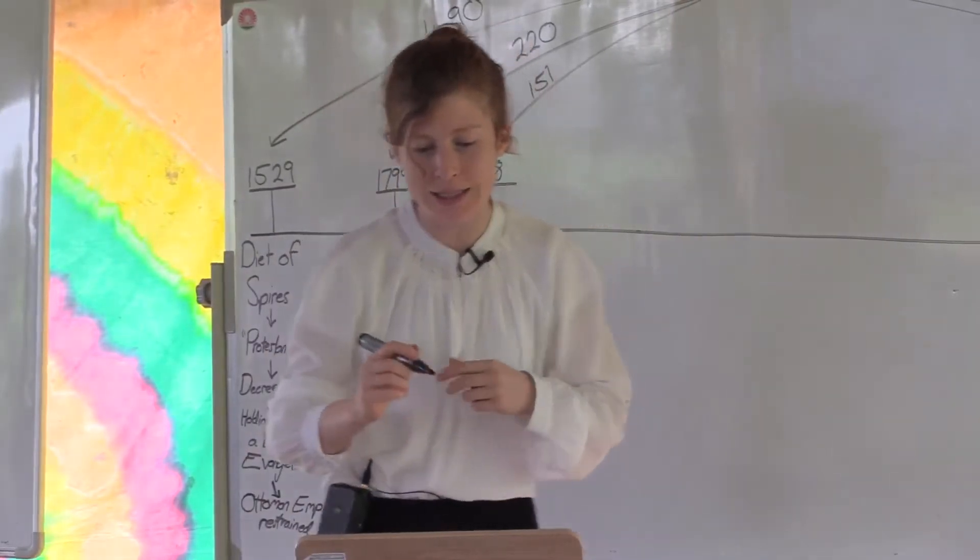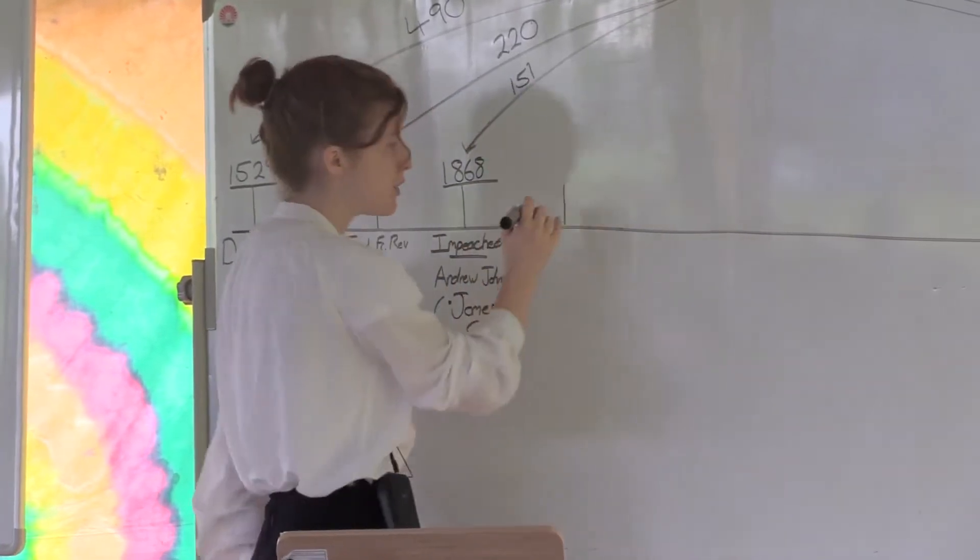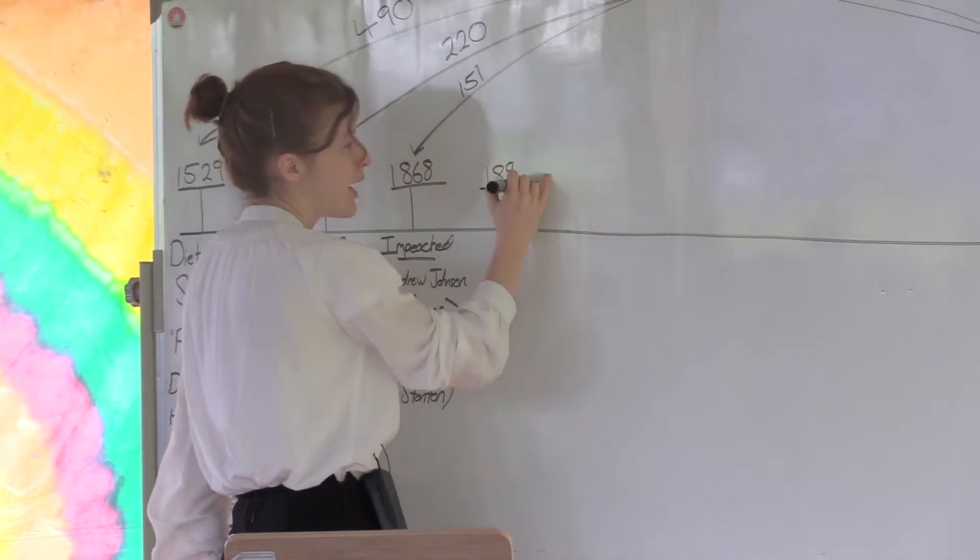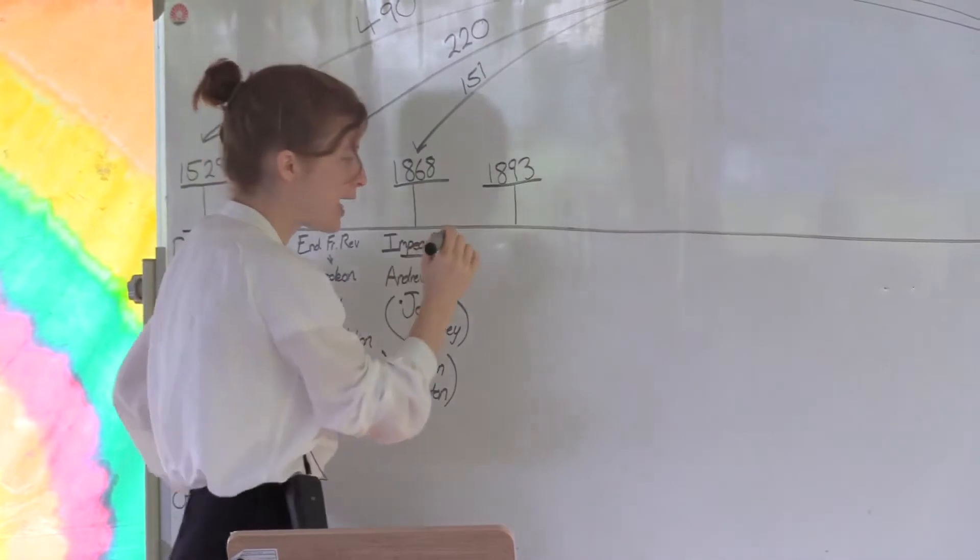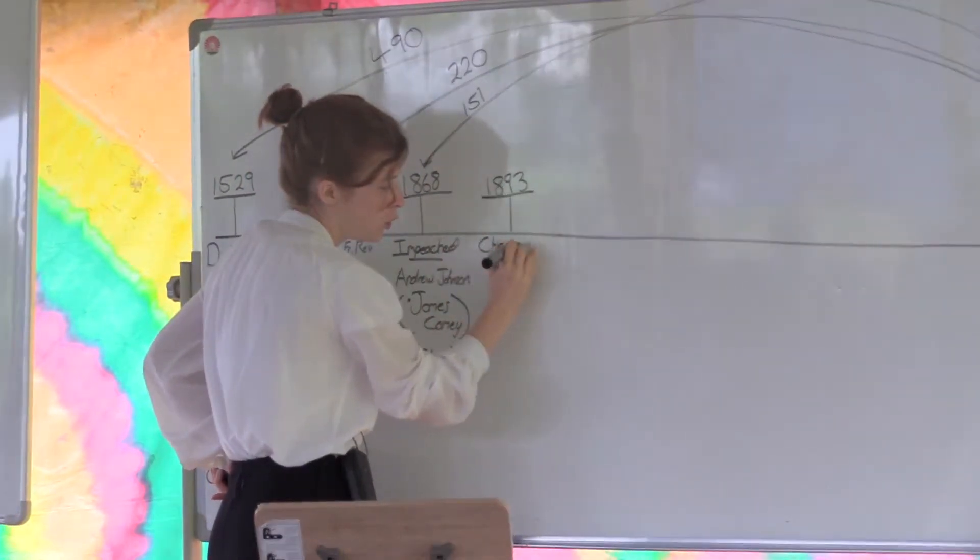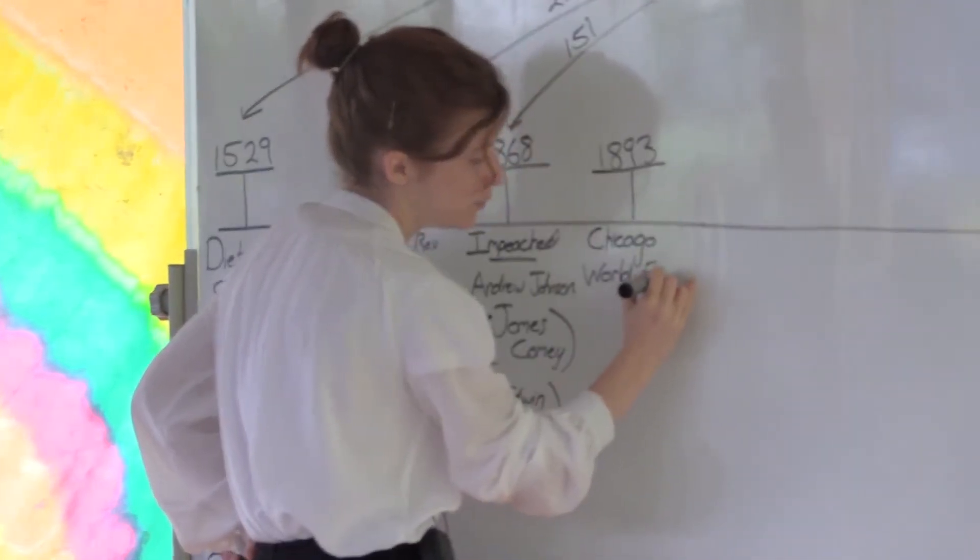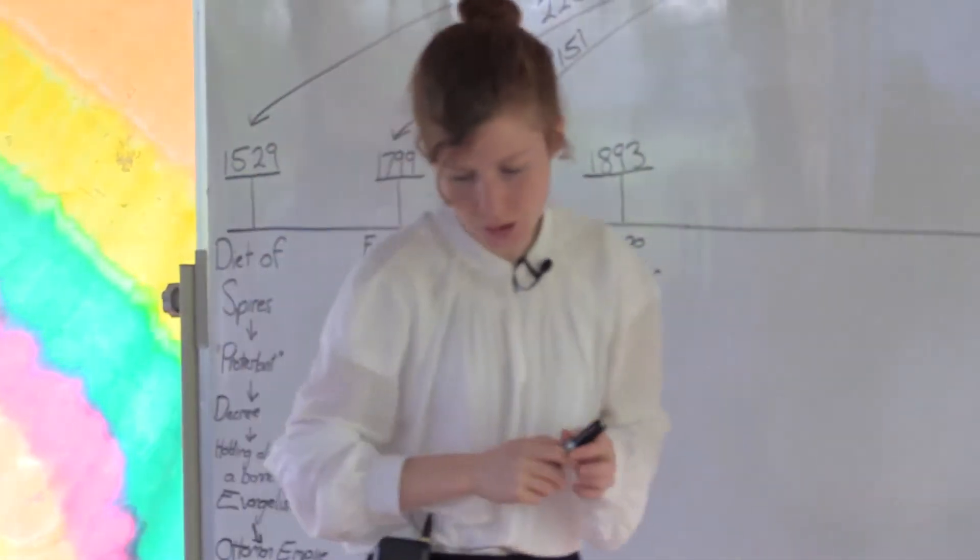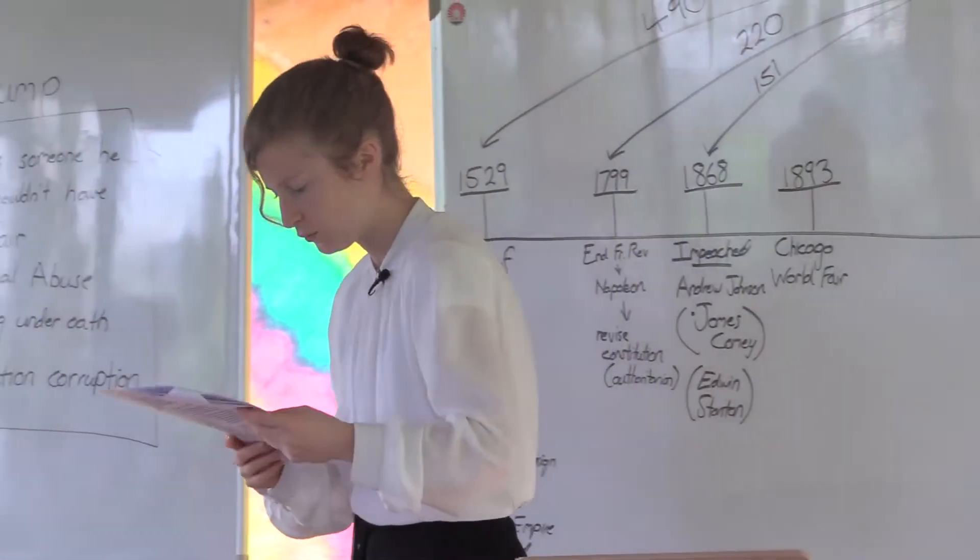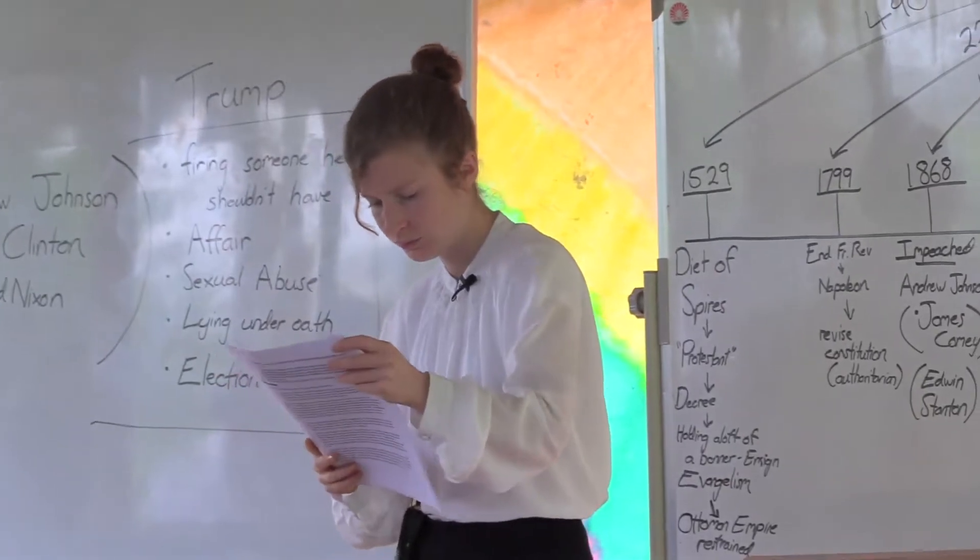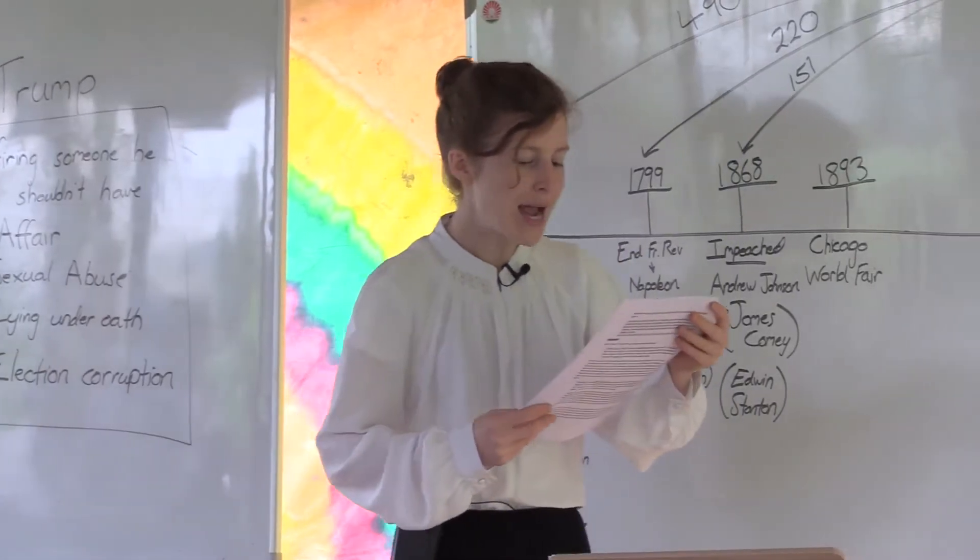The next date I would like us to consider is the 126. The 126 takes us to 1893. What happened in 1893? We're going to talk about the Chicago World Fair. A.T. Jones is going to tell us about the Chicago World Fair.